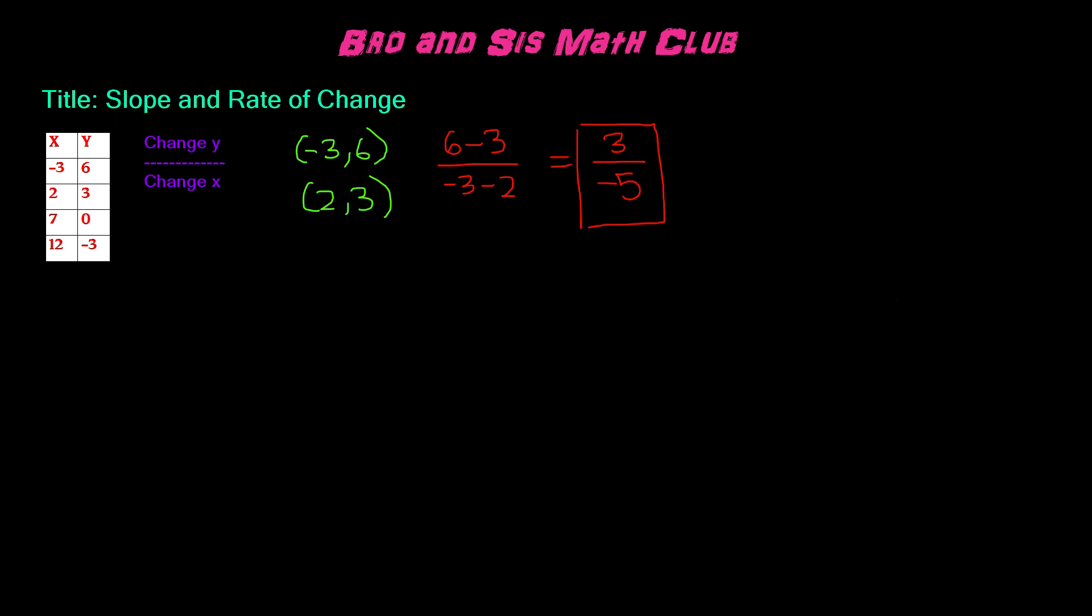Remember, in order to make sure, we have to do all of the coordinates. So first we did (-3, 6) and (2, 3). Now let's do (2, 3) and (7, 0). So once again, we're going to do (3 - 0) and (2 - 7) and we get 3 over -5. So far we're good.